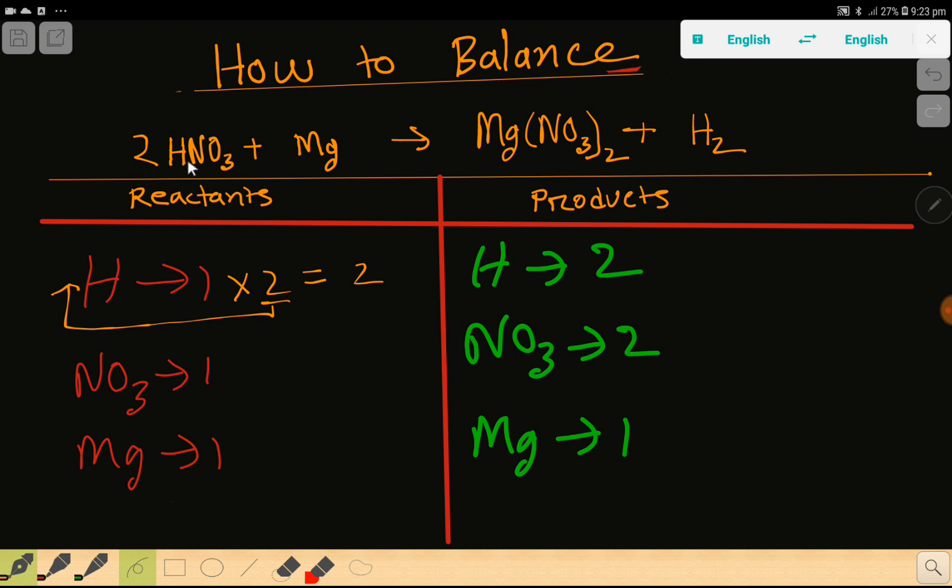So now hydrogen is two and two, then nitrate is two and two.